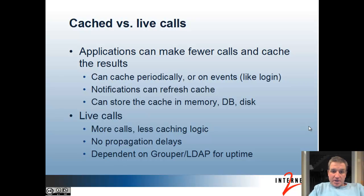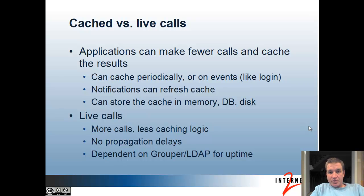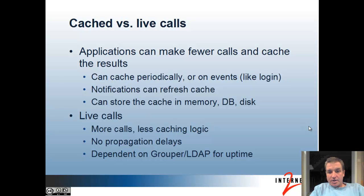Another decision is whether you're caching the authorization data in your application versus making live calls. If you are caching, applications can make fewer calls to Grouper and cache the results, and you can either refresh that cache periodically or on events — for example, when someone logs in, you contact Grouper and get their most recent authorizations. Notifications from the Grouper changelog can refresh the cache so that things stay in sync at real-time or near real-time. You can store this cache in memory, in the application database, or on disk, and you can store it in multiple places so that if you restart the application, you have your authorizations right there.